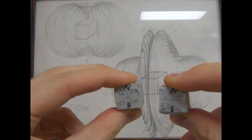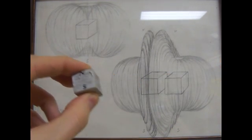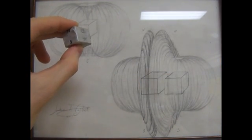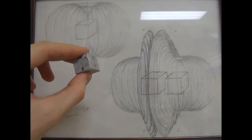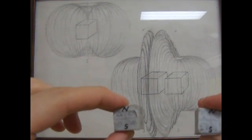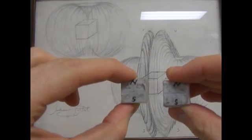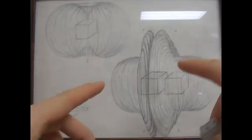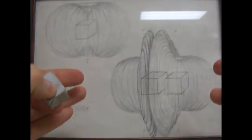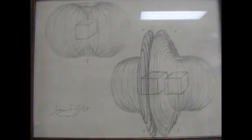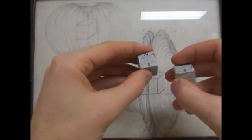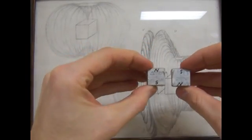So if we can imagine what the magnetic field around this magnet looks like, when we push it into another magnet, we can imagine what the magnetic field would do. It would bubble out and create a force repelling the two magnets. The opposite is true with north to south.